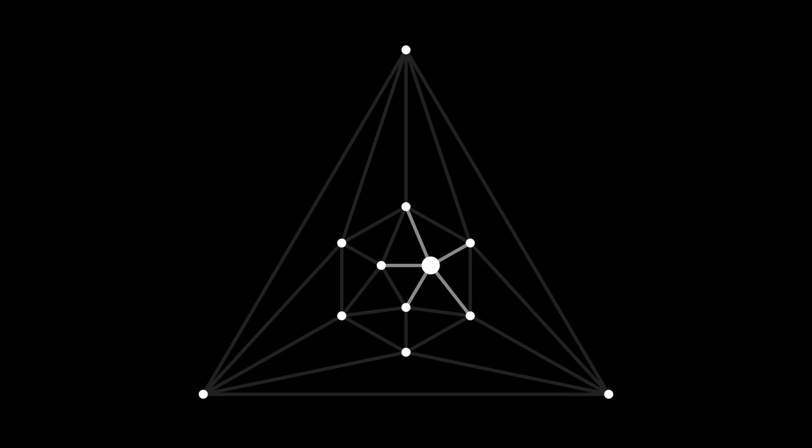Two neighboring edges can't be the same color because then that triangular face wouldn't use all three colors. Can we get away with just two colors at a vertex? If we use just two colors, we end up with a duplicate color on some neighboring edges. So we're guaranteed to see all three colors around each vertex. In particular, there are three colors among the five edges around each vertex.